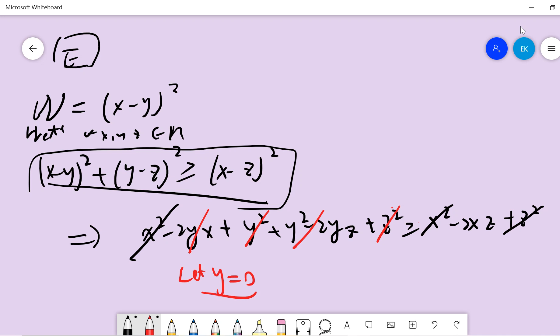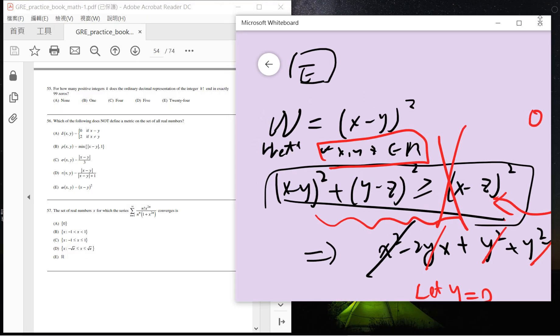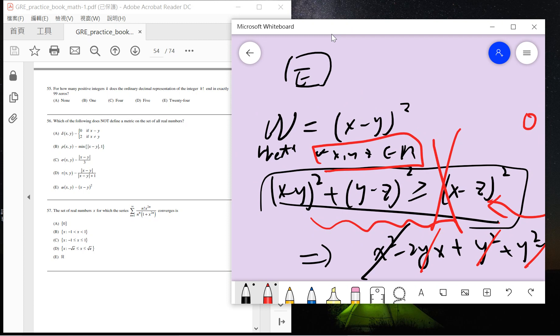We have this equality says that -2xz is smaller than zero. This means x·z needs to be greater than zero. So that means if x·z is smaller than zero, then this equality will not hold. So that means for all x, y, z belongs to R, this cannot be a good metric, because the triangle inequality cannot be correct. So the answer is definitely E.